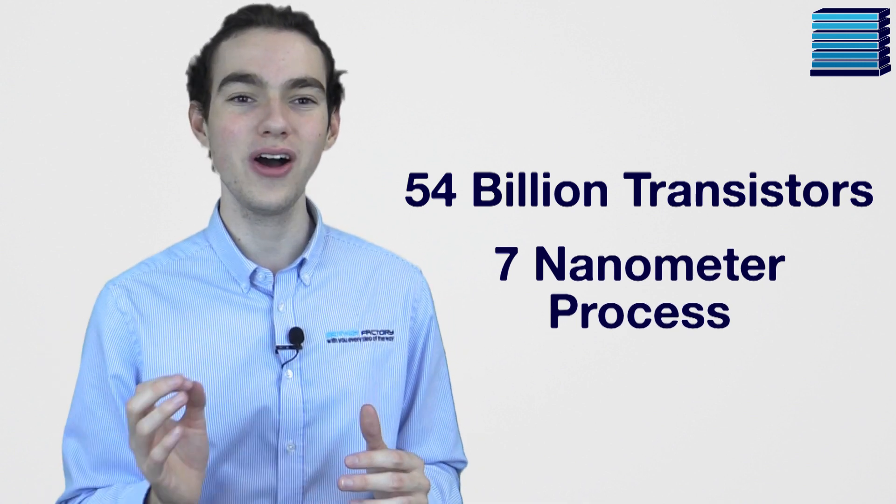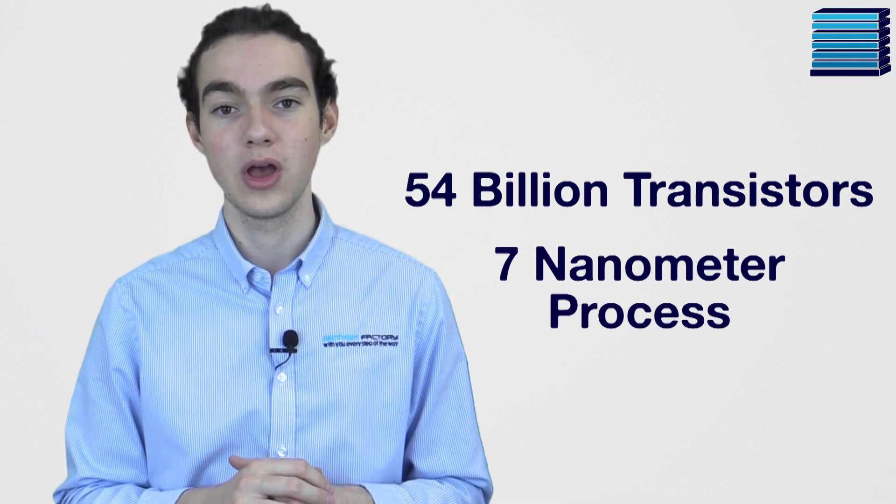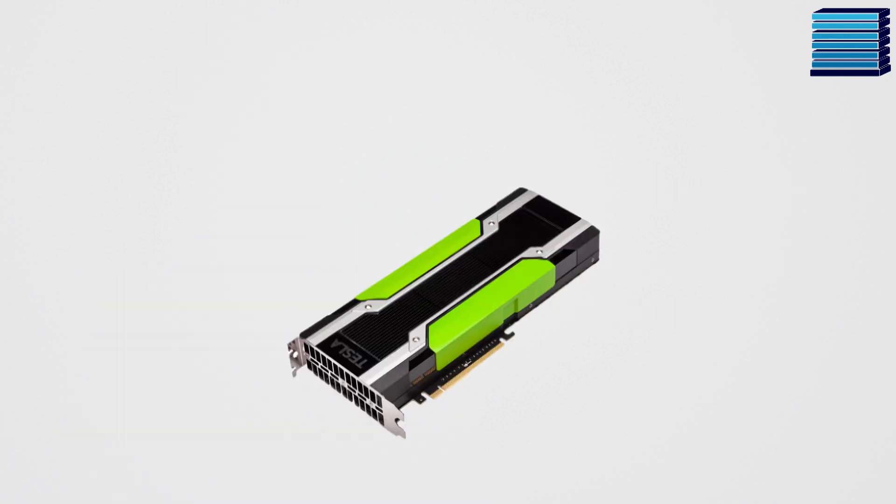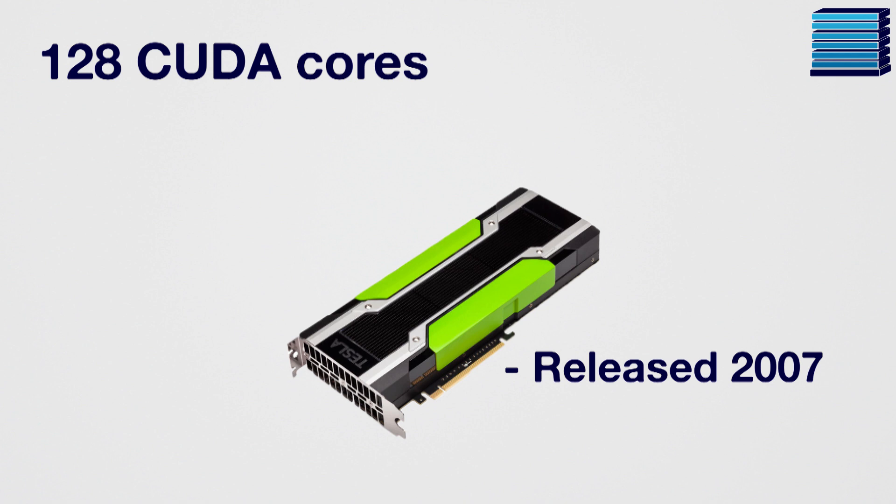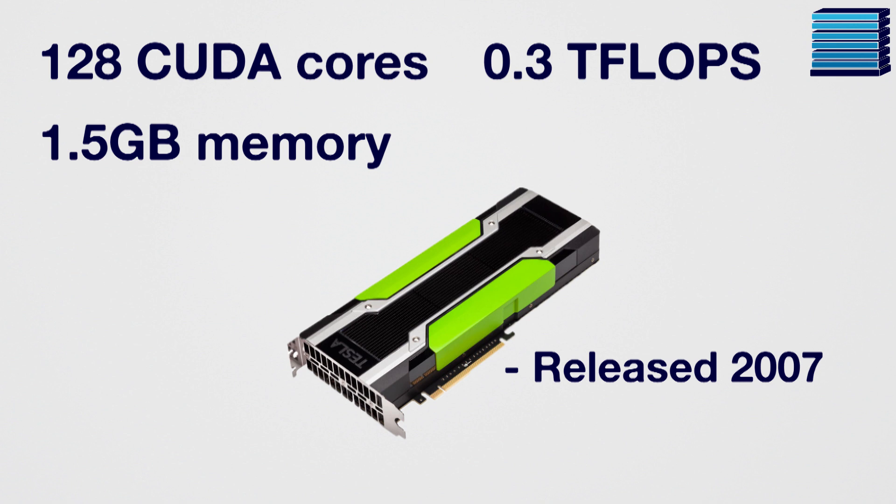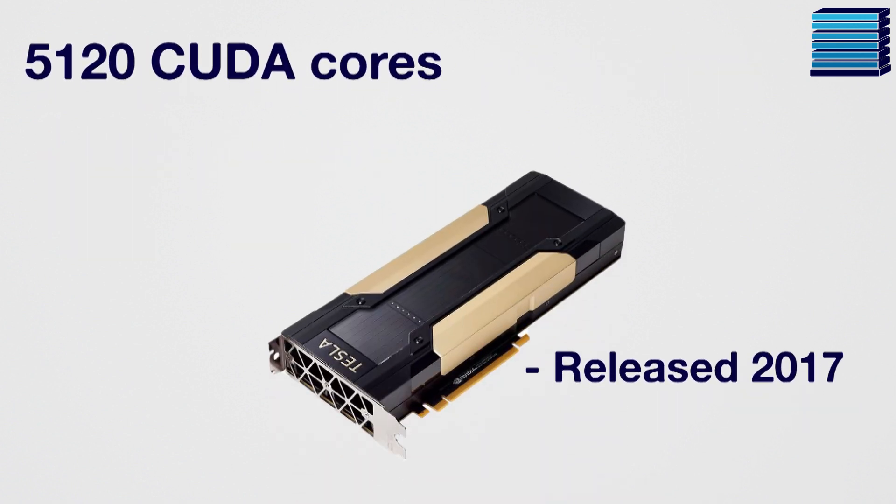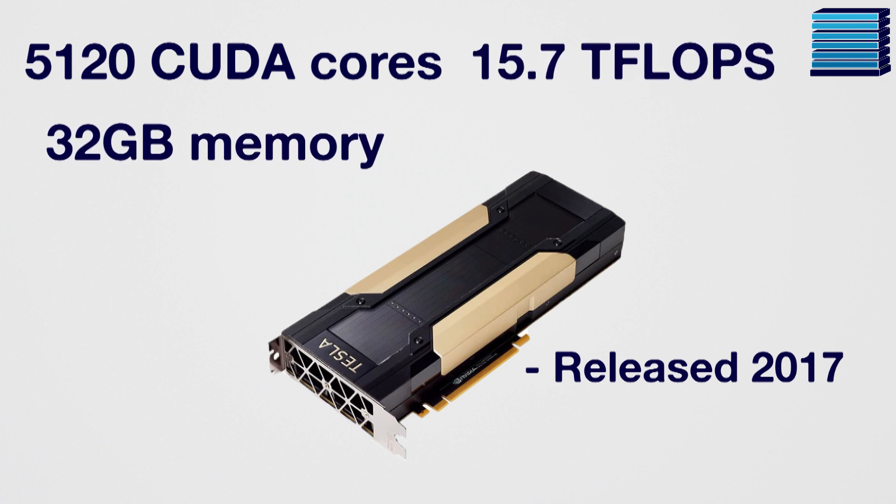To illustrate how far these supercomputer GPUs have come, we need to look at some numbers. The first Tesla card came out back in 2007, at 128 CUDA cores, 1.5GB of memory, and performed at 0.3 TFLOPs. Previously the most recent card, the V100, has 5,120 CUDA cores, 32GB of memory, and performs at 15.7 TFLOPs.